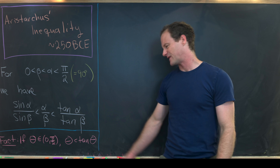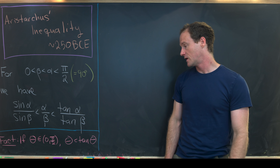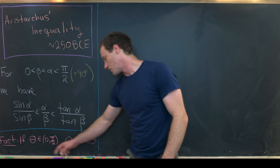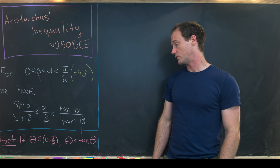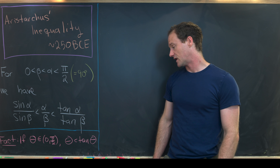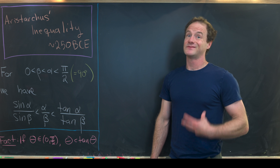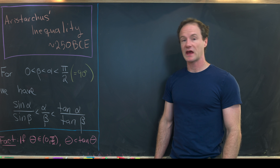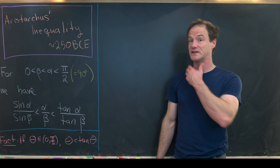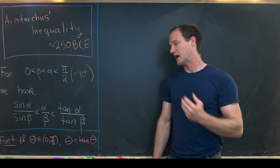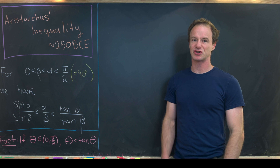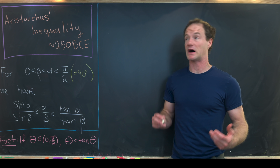We're going to use the following fact: if theta is an acute angle — in other words between 0 and pi over 2 — then theta is less than the tangent of theta. You can prove this a number of ways. I would prove it with calculus by showing that tan(theta) minus theta is always positive, by taking its derivative and showing it's always increasing.